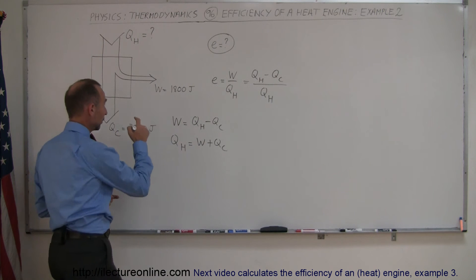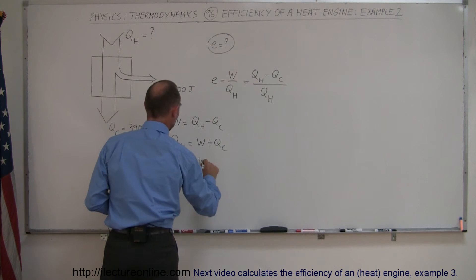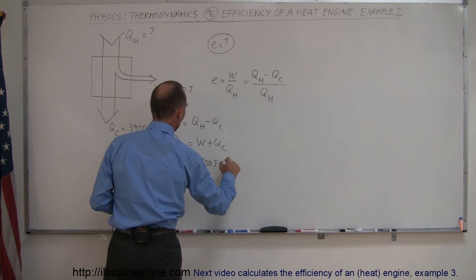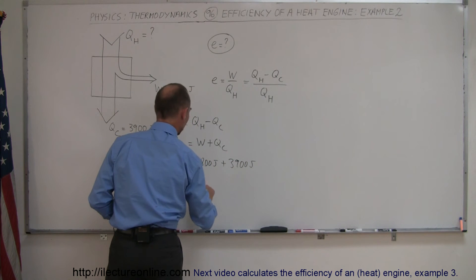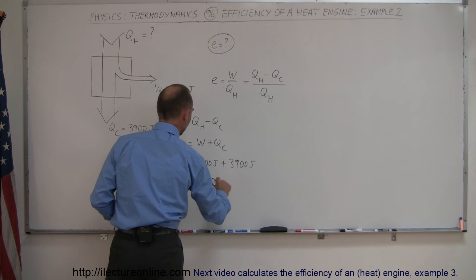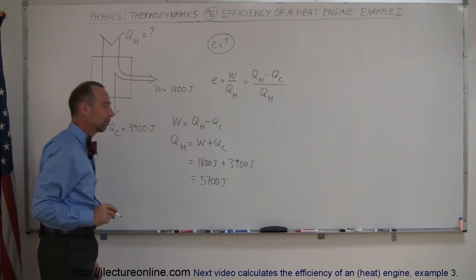So we grab the work done, 1,800 joules, we add that to the heat expelled to the cold reservoir, 3,900 joules, put that together and we have 5,700 joules coming from the hot reservoir.